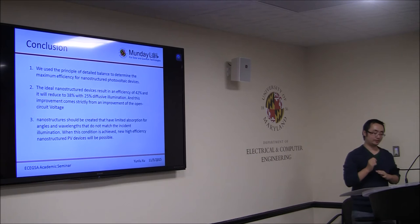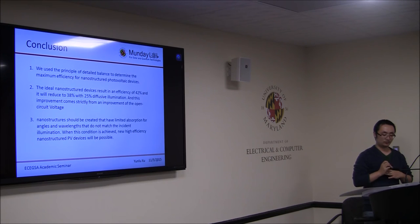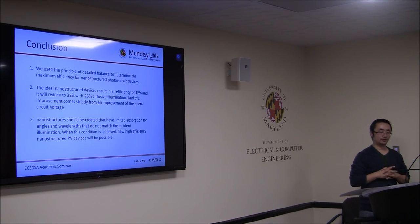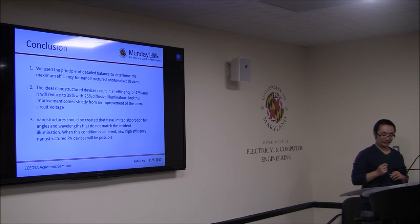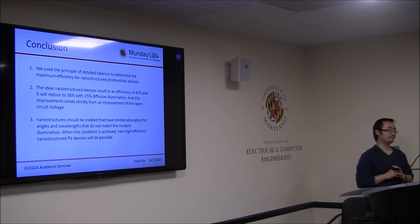In conclusion, using the principle of detailed balance to determine the maximum efficiency of nanostructure photovoltaic devices, the ideal nanostructure device results in 42% efficiency, reducing to 38% with 25% diffuse illumination. This improvement comes strictly from the improvement of the open circuit voltage. Nanostructure solar cells that have limited absorption for angles not matching the incident illumination will enable new high-efficiency nanostructure solar cell devices.